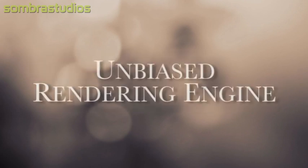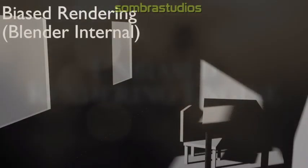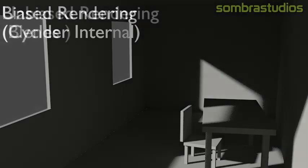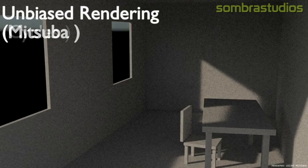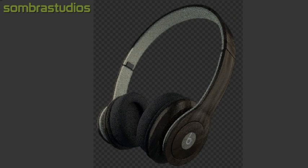I suggest starting out by using an unbiased rendering engine. There are two kinds of rendering engines: biased rendering engines like Blender Internal, and unbiased rendering engines like Cycles. Unbiased rendering engines calculate the path of light just the way it is in the real world. This takes far more time to render, but the result is far more realistic.